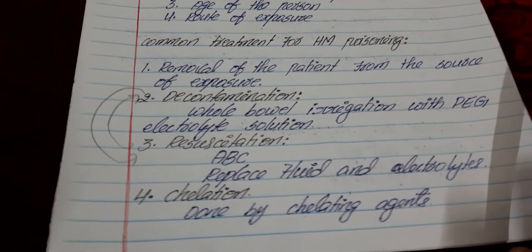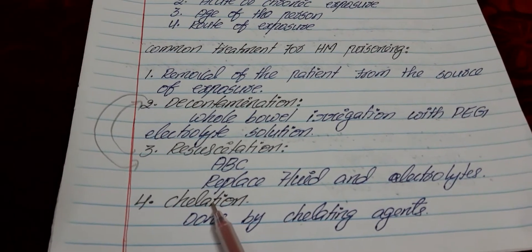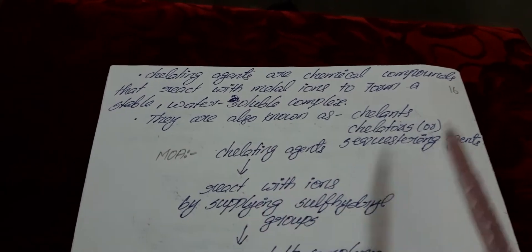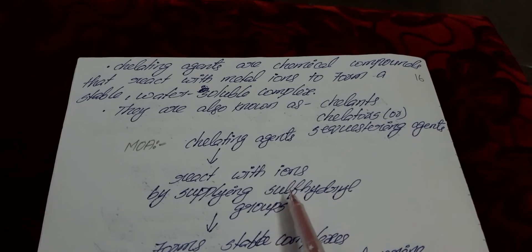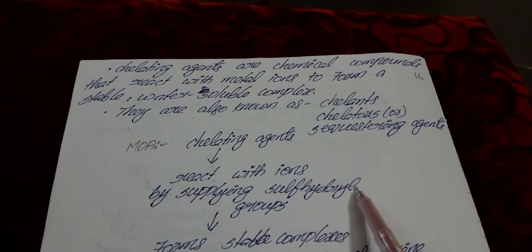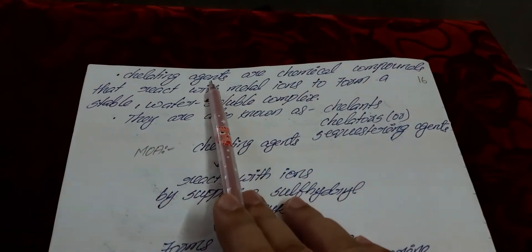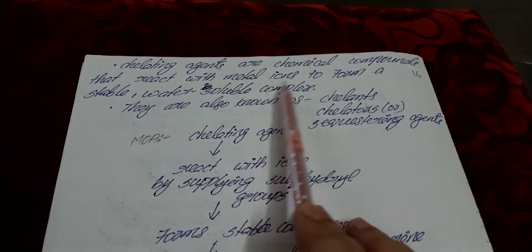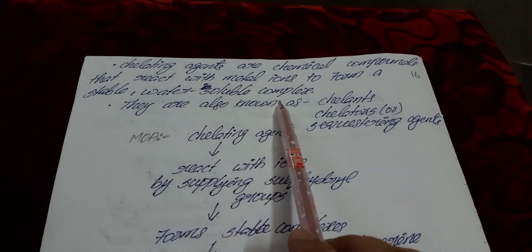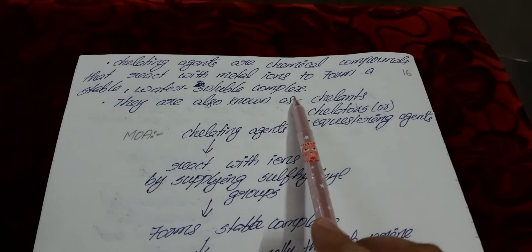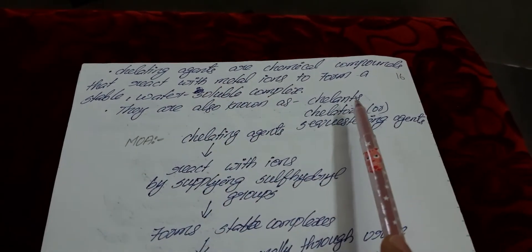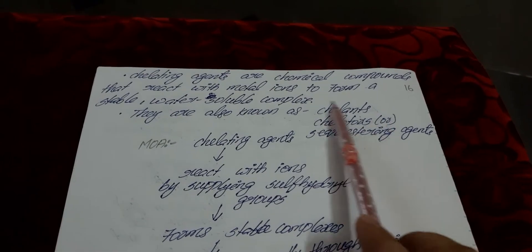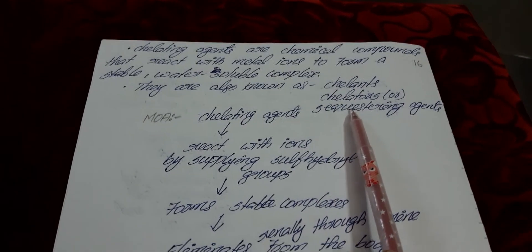The main treatment used in heavy metal poisoning is chelation. Chelation is a very important treatment used specifically in heavy metal toxicity. Chelation is carried out by chelating agents, which are chemical compounds that react with the metal ions and form a stable, water-soluble complex. Chelating agents are also called chelans, chelators, or sequestering agents.